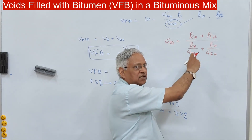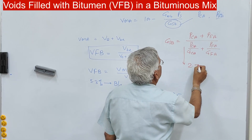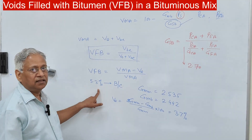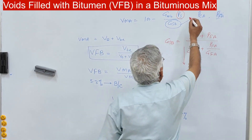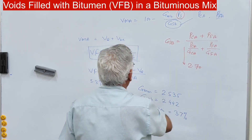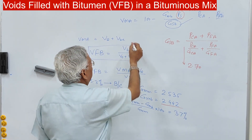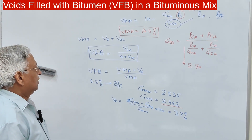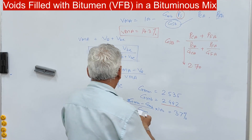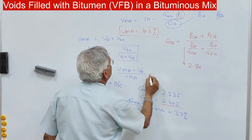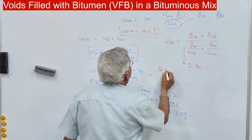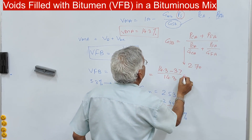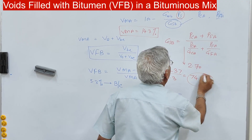Let us say this value of GSB is 2.7 for your mix. Since the mix is designed at 5.3 percent binder content, PS will be 100 minus 5.3, that is 94.7 percent. GMB is given as 2.442. So you can calculate VMA as 14.3 percent. With this VMA, you can find VFA: VFA = (VMA minus VA) / VMA = (14.3 minus 3.7) / 14.3, which gives a value of 74.1 percent.